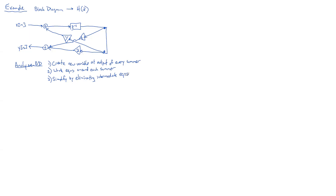So let's do it for this one. Our first step is to create new variables at the output of every summer. Here's a summer, so we'll create a new variable at the output. I'm going to write them as already transformed in the Z domain, so x(n) becomes X(z) and y(n) becomes Y(z). That is at the output of the summer, so we don't need to write another one. We've done step one.